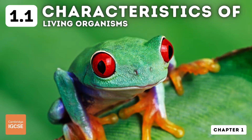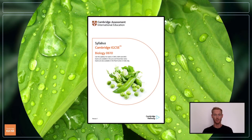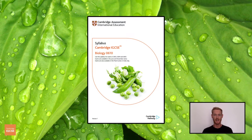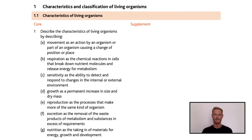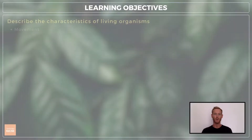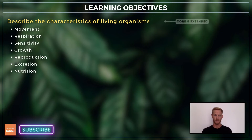Hello and welcome to another complete Cambridge IGCSE biology lesson, where you'll learn absolutely everything you need to know on topic 1.1, characteristics of living organisms. We'll be following the Cambridge syllabus exactly, and we'll cover absolutely everything you need to know for your final exam. For topic 1.1, you need to be able to describe the characteristics of all living organisms, and there's no extended supplement for this one.